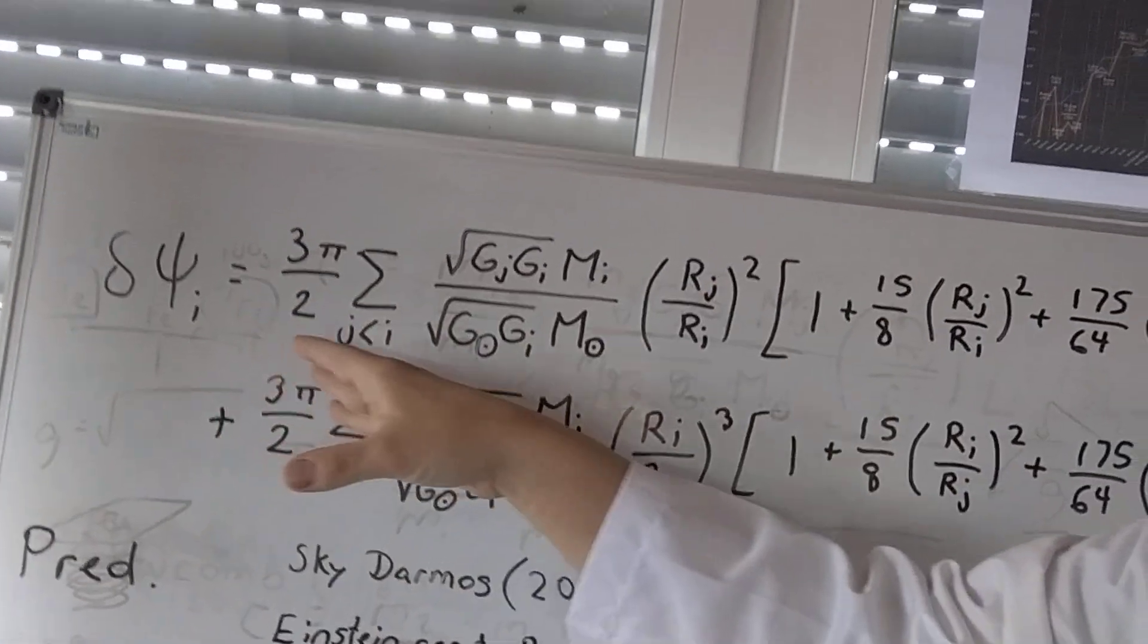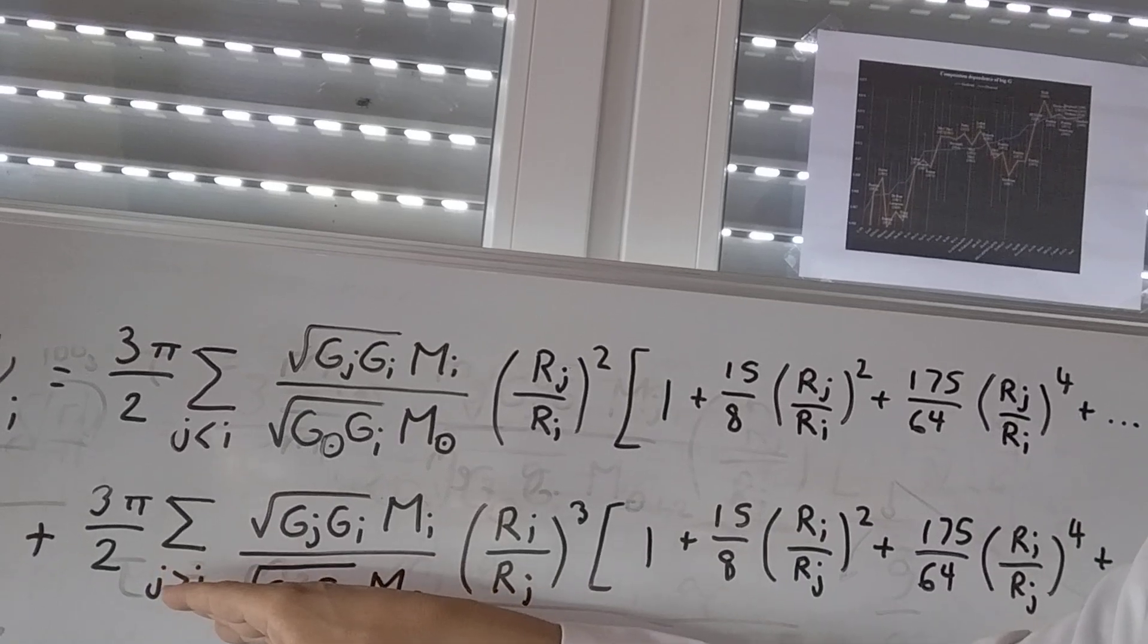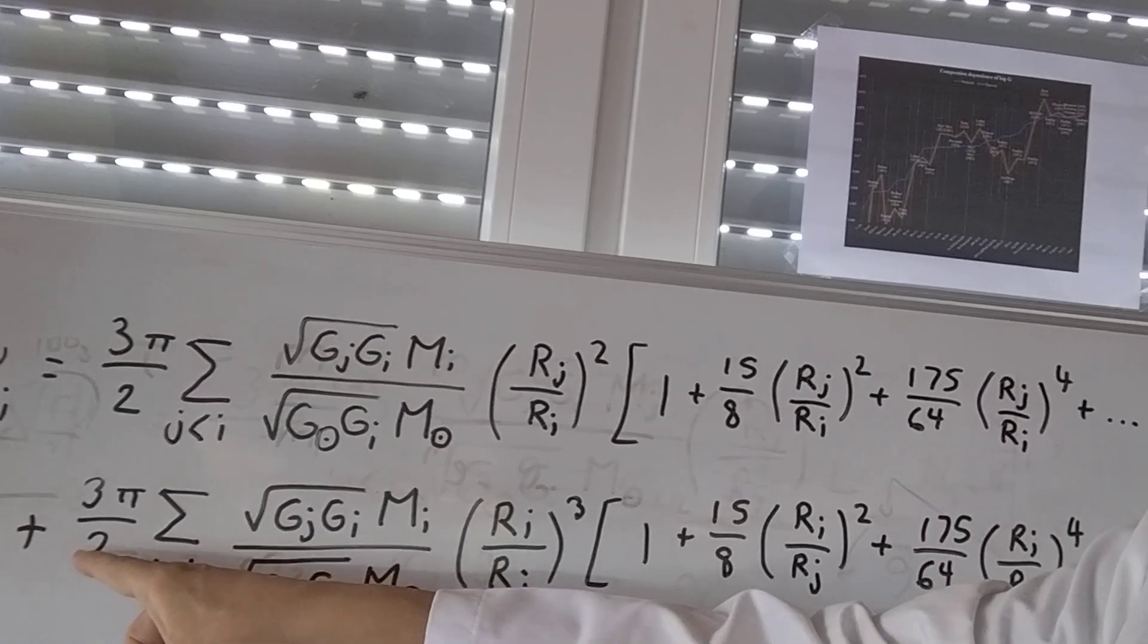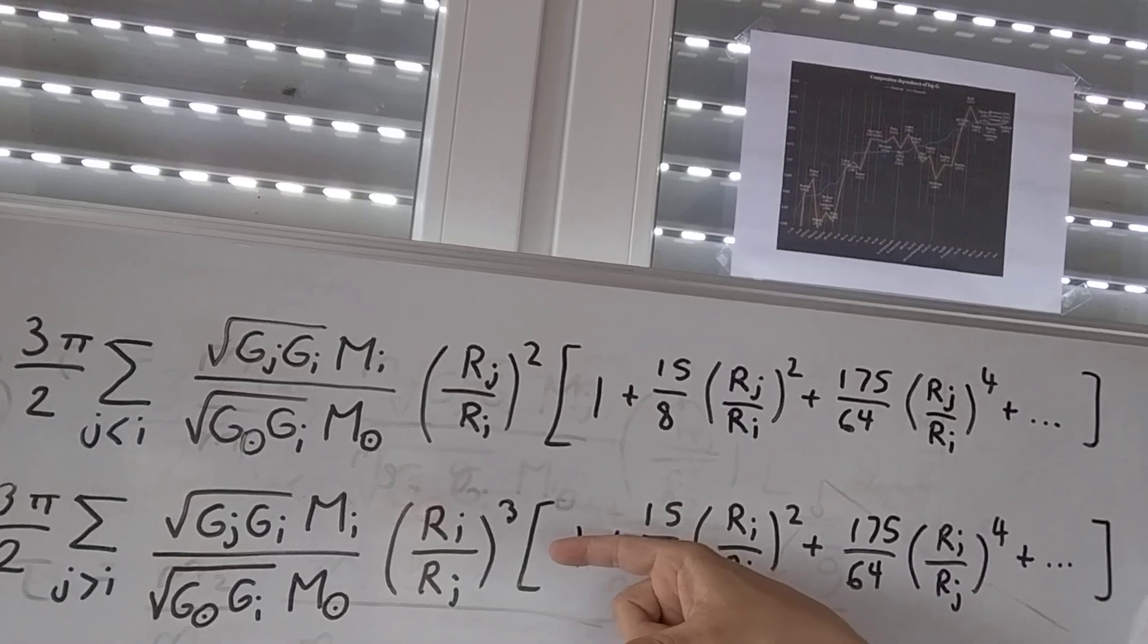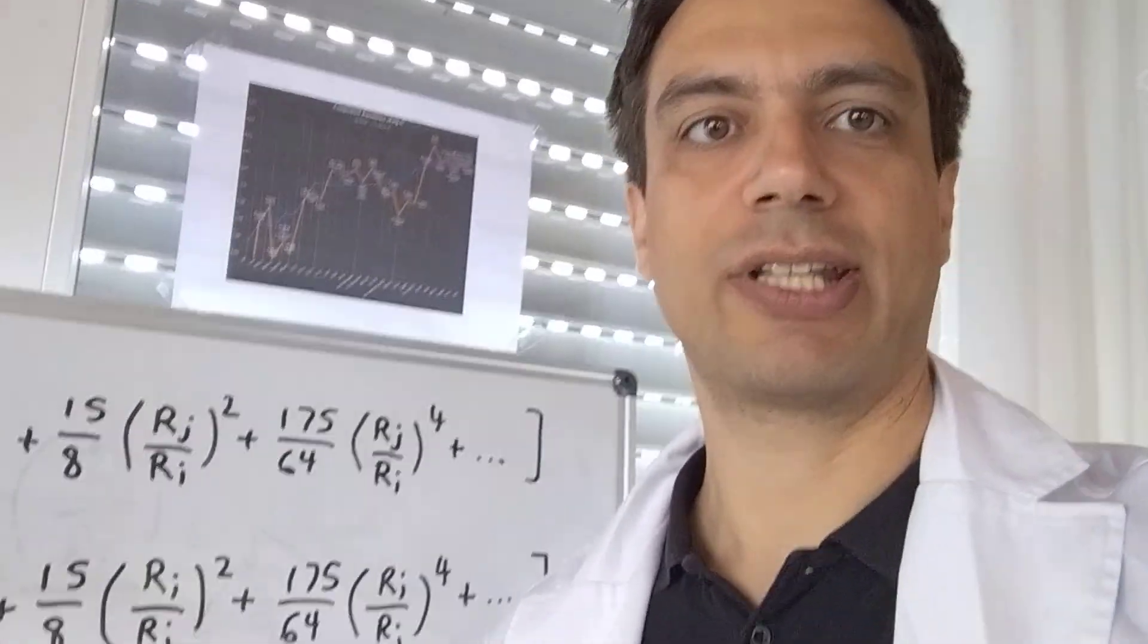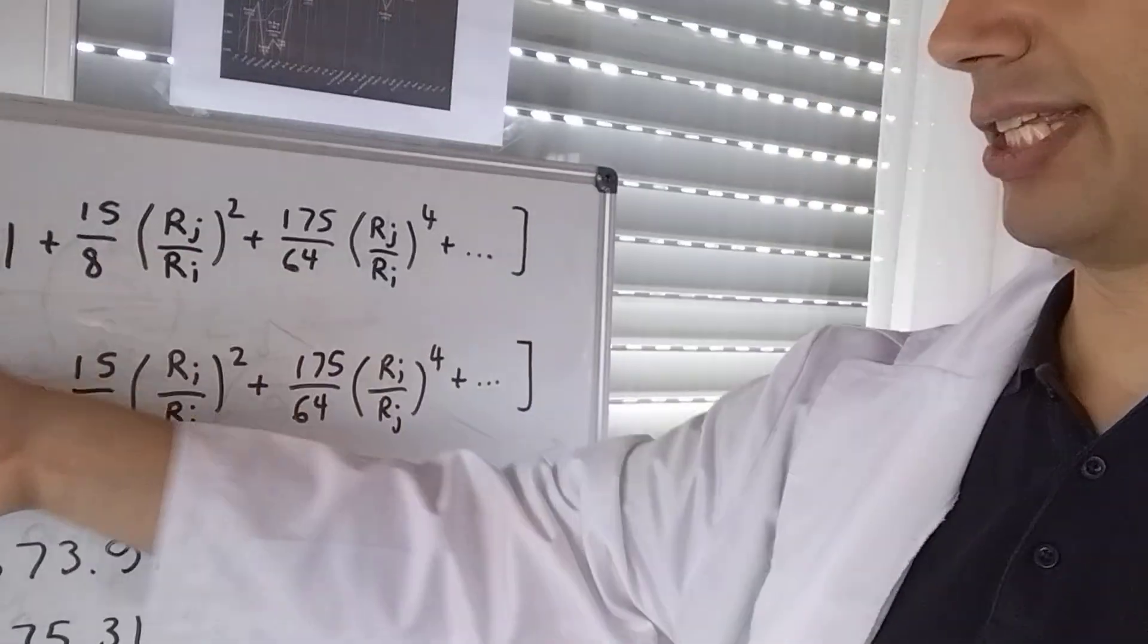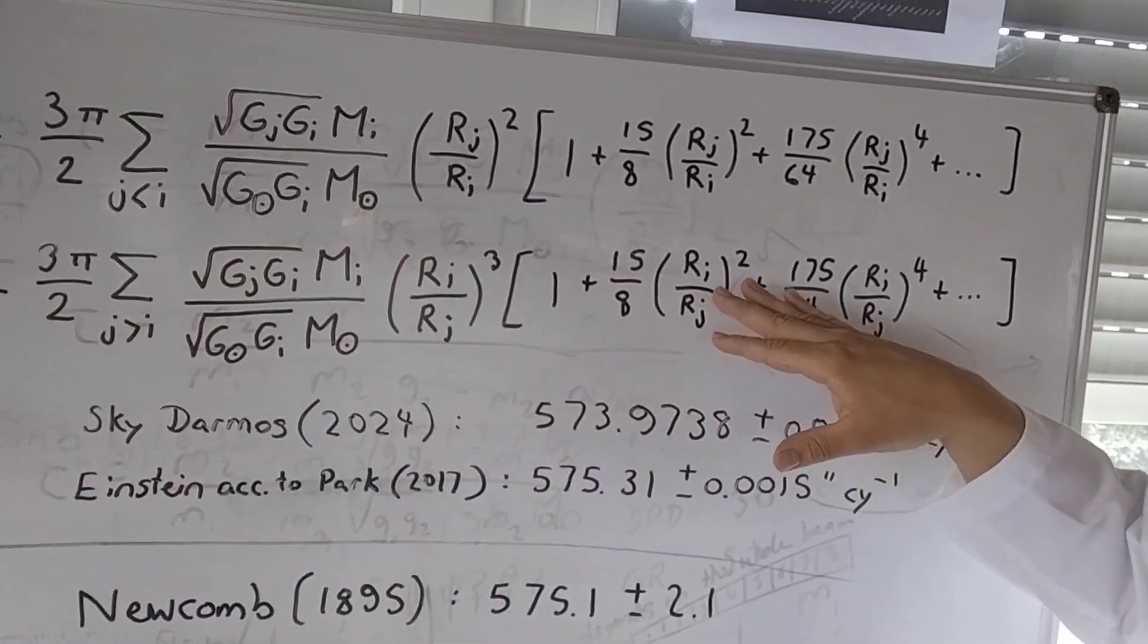If they are closer to the Sun than Mercury, then it would be this equation here. But that's not possible in this case because Mercury is already the closest to the Sun and there are no other planets closer to it. So this second term here disappears.